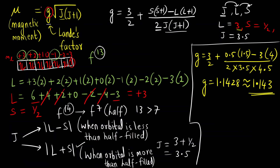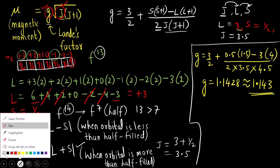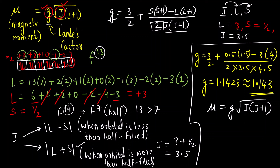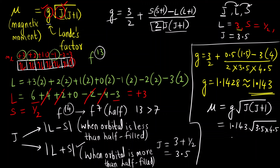Now we have all values to substitute into the magnetic moment formula: μ = g × √(J(J+1)). Be very careful — the factor 2 appears in the Landé g-factor formula, not here. With g = 1.143 and J = 3.5, we get μ = 1.143 × √(3.5 × 4.5), which comes out to 4.54 Bohr magneton.